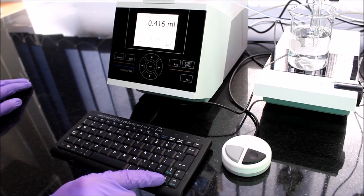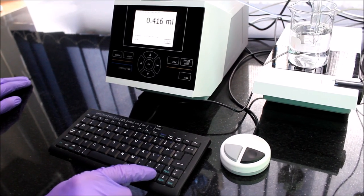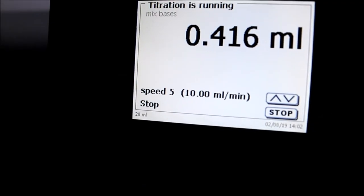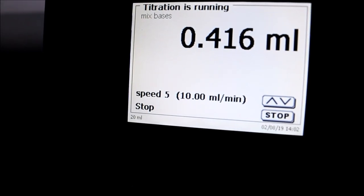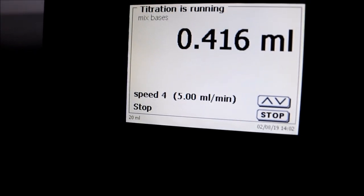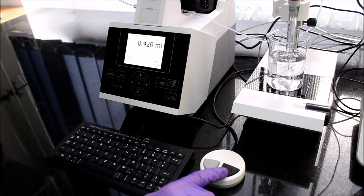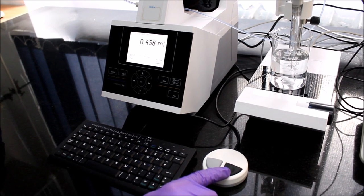We can change the speed of continuous delivery using arrow keys. The screen shows the rate of solution delivery on each speed profile. So now I change the speed and you can see that the rate of delivery has decreased.